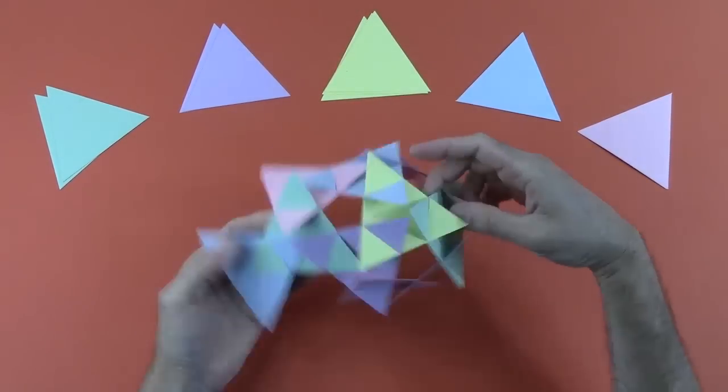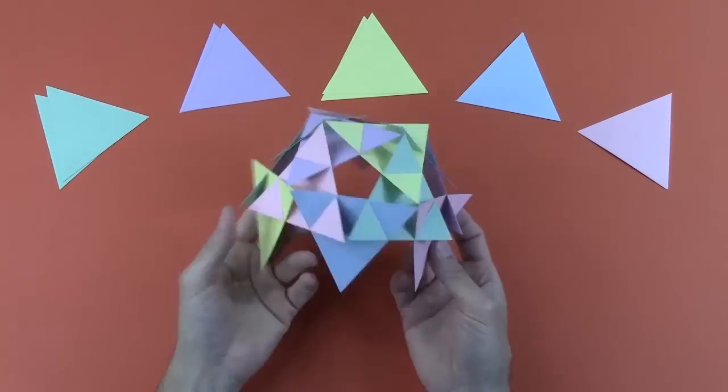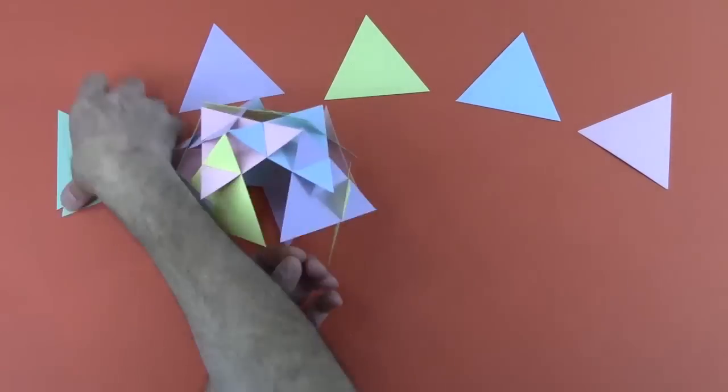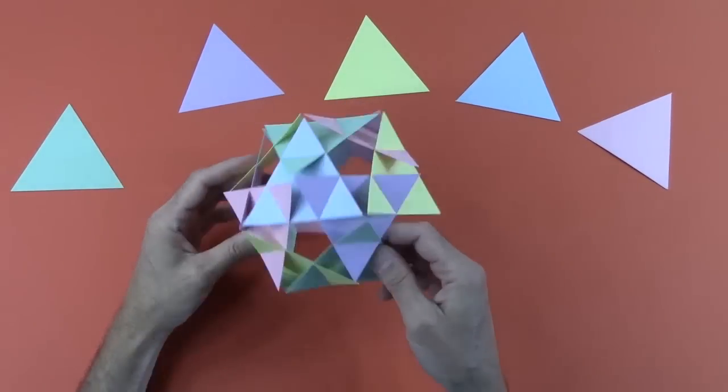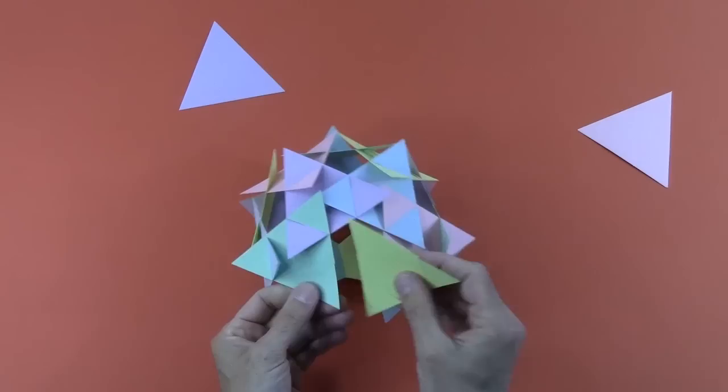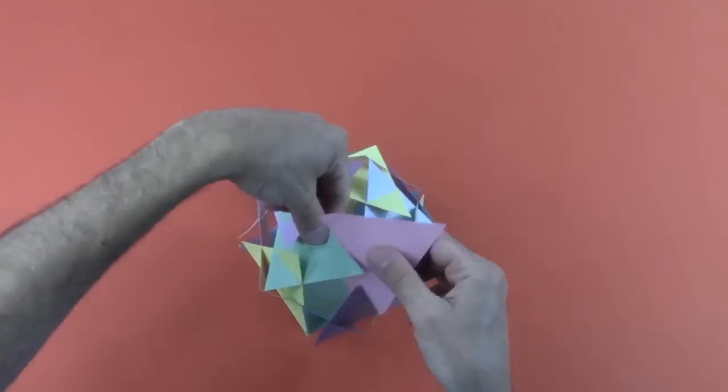You just connect the slots, being sure to have the points on the outside. I'm following a particular coloring pattern, so all five colors appear around each pentagonal opening. That takes some planning, and I'll leave that to you as a puzzle.